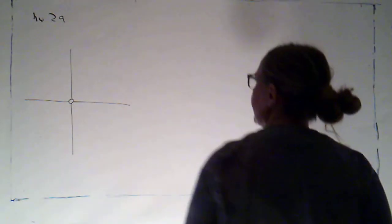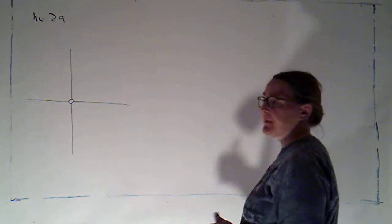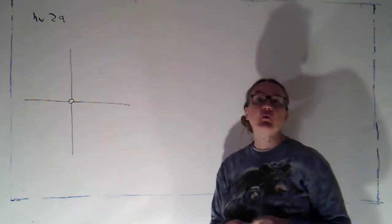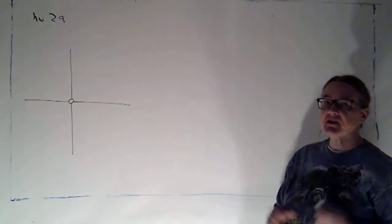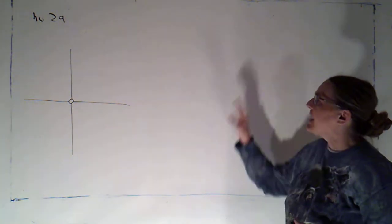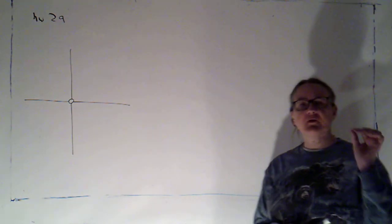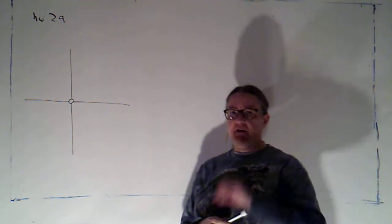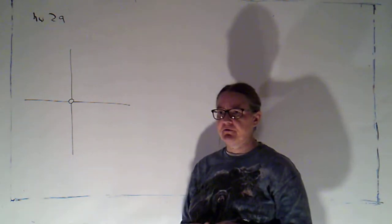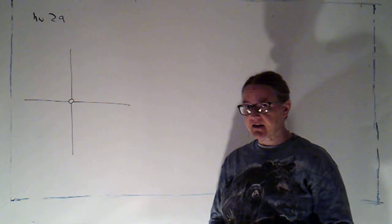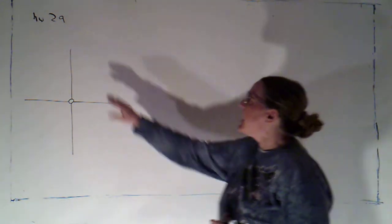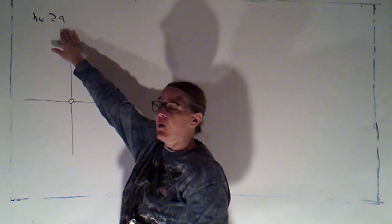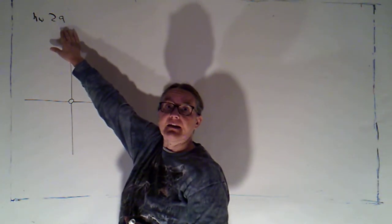In this video we're going to talk about why we have the requirement that the region we're working on be simply connected. Before I do that, I want to point out that when we talked about the test for a conservative vector field, I mentioned there's a similar test if you're working in 3-space. That's essentially in homework problem 29.